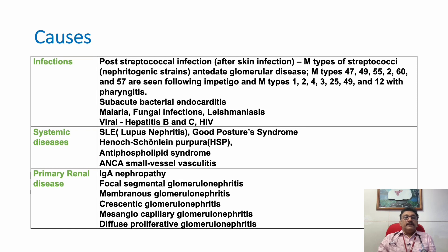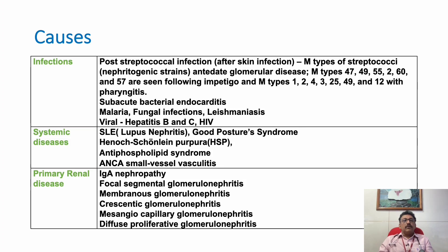In systemic diseases, mainly immune-mediated ones, the most important is systemic lupus erythematosus. One of the major organs involved in SLE is the kidney, called lupus nephritis. Another important syndrome is Goodpasture syndrome. Henoch-Schönlein purpura — mainly lower limb purpuras — is mostly a benign condition, rarely involving kidneys. Antiphospholipid syndrome can form thrombi in arteries and veins, sometimes blocking kidney circulation and leading to glomerulonephritis. ANCA-related small vessel vasculitis can also produce glomerulonephritis.